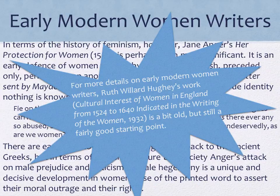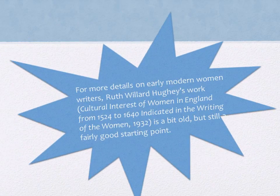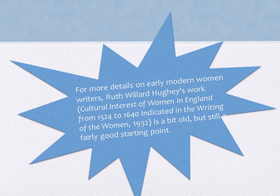That's what I'm going to finish with for today. If you'd like more details on early modern writers, take a look at Ruth Willard Huey's work on cultural interests of women in England from 1524 to 1640 — it's available online. It goes back to the 1930s but is a pretty good starting point; she's brought together all the major authors from that period. I would recommend that as your research basis if you want to get started on that topic. So that's the end of today's presentation.